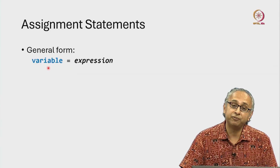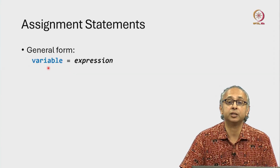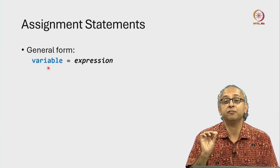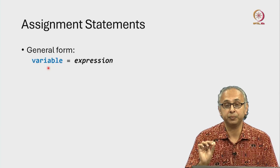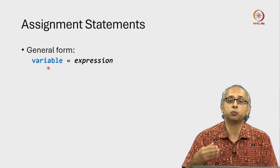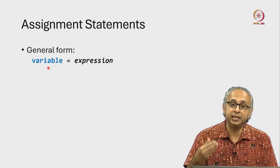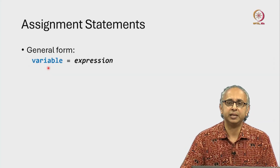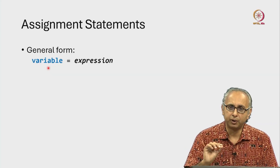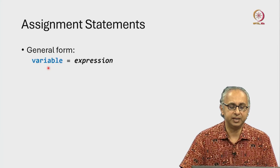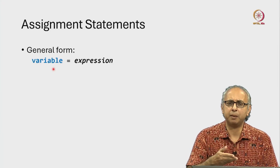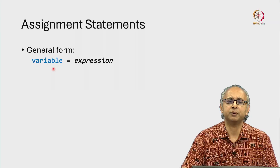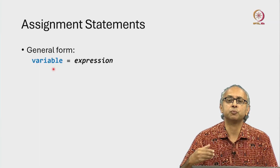On the left hand side of the assignment operator, we write the name of a variable. There are some rules about what legal variable names are — we will come to those later on. But for now we will write some name of a variable. We have seen examples like M and D and numerator and denominator, which are more meaningful.